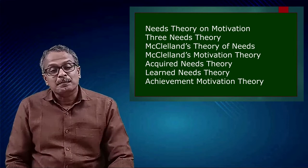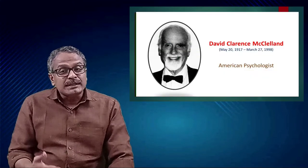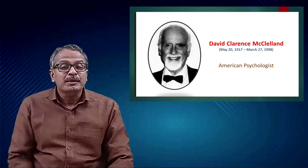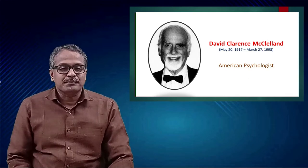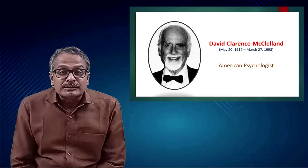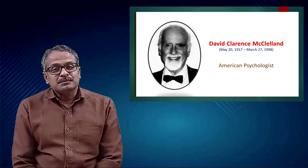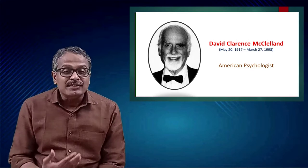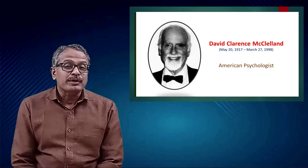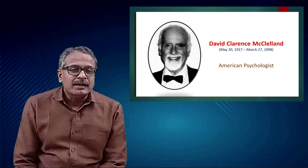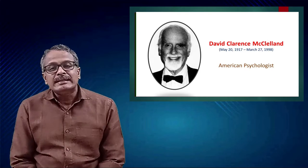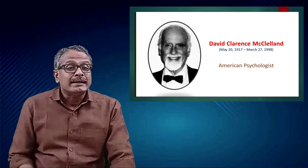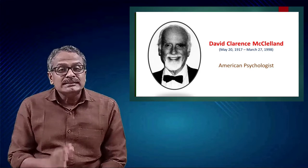As most of the names indicate, this theory was propounded by McClelland. His full name is David Clarence McClelland. He was an American psychologist, born in 1917 and died in the year 1998 at the age of 81. It is believed that McClelland developed this theory in the year 1961 along with his associate John Atkinson.